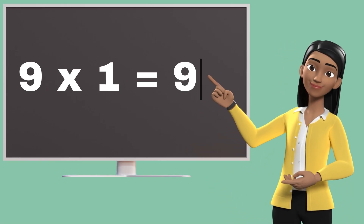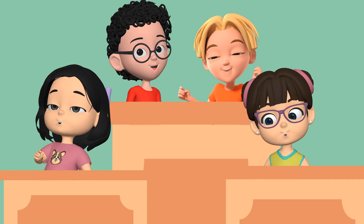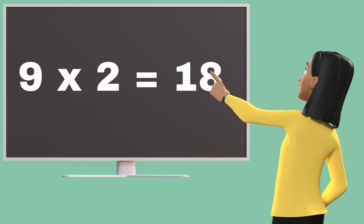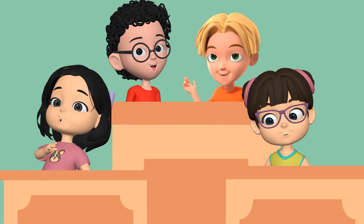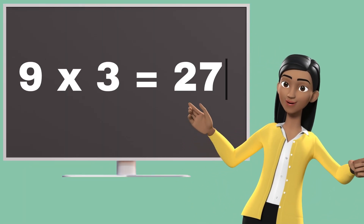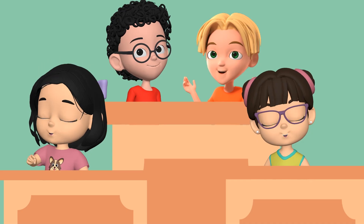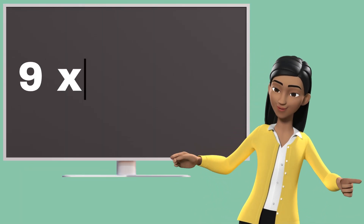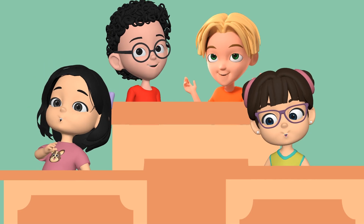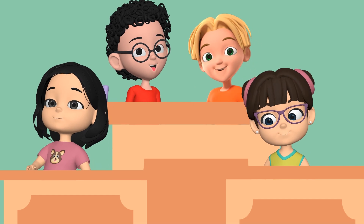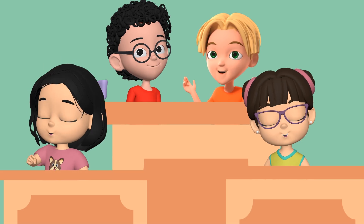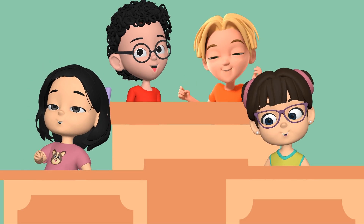Nine ones are nine. Nine twos are eighteen. Nine threes are twenty-seven. Nine fours are thirty-six. Nine fours are thirty-six. Nine fives are forty-five. Nine fives are forty-five.